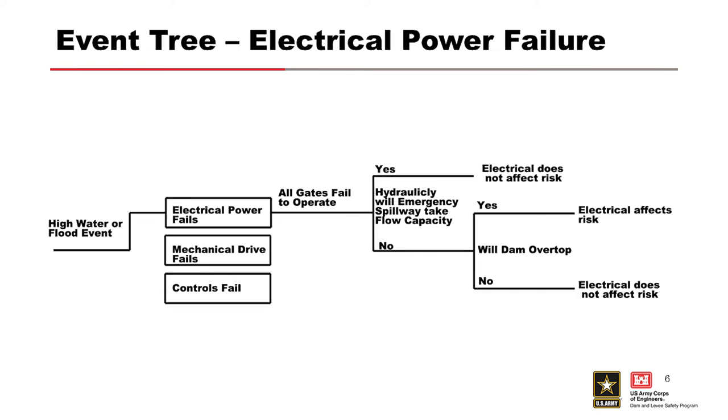All those need to be looked at in this case. So, this event tree, first event, you have a high water flood event, electrical power fails, that causes all gates to fail to operate. Then you ask the question, is it hydraulically, will the emergency spillway gate take the flow capacity, yes or no? If yes, then the electrical does not affect the risk.